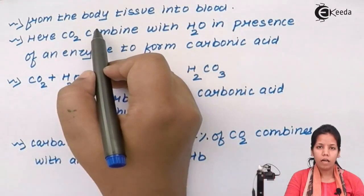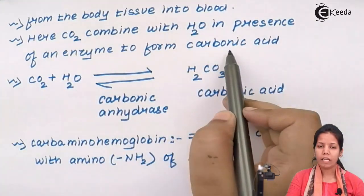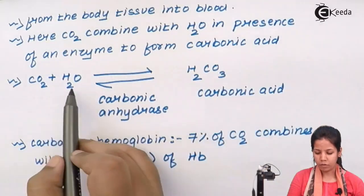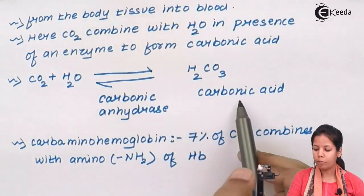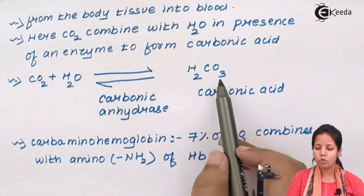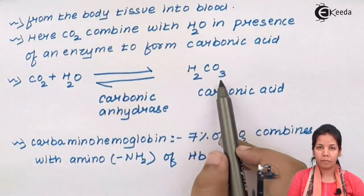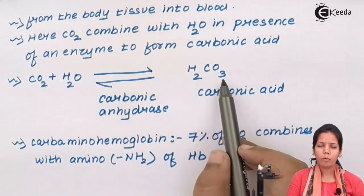In the bicarbonate ion formation method, CO2 combines with H2O in the presence of the enzyme carbonic anhydrase to form carbonic acid, H2CO3. Once H2CO3 is formed, it dissociates in the body — carbon dioxide is separated and expelled out. Bicarbonates represent the easiest and most widely used method for the body to remove carbon dioxide.